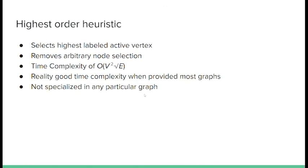The next heuristic we're going to talk about is the highest label heuristic. This heuristic selects the highest labeled active vertex — the height we discussed in the visualization — to dispose of next, because that's the most ideal vertex to work with based on the necessary boundaries of the problem. This removes the arbitrary node selection and produces a time complexity of O(V²√E). This is the most ideal time complexity for most graphs overall, meaning most graphs run with this heuristic will have relatively good time complexity. However, it's not specialized for any particular graph type, which means there are cases where other heuristics will have a better time complexity.